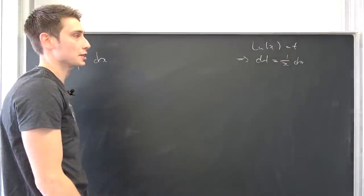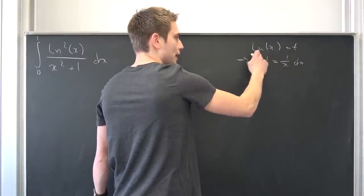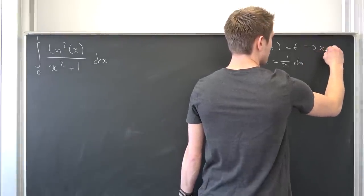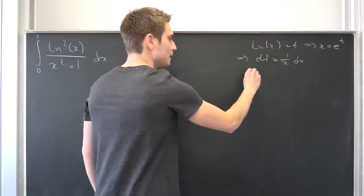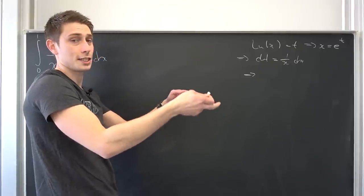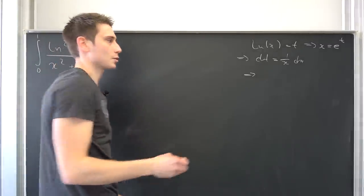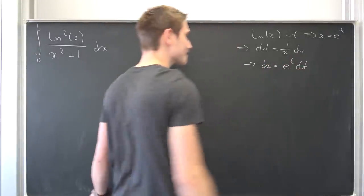When we differentiate that, we are going to get 1 over x dx is equal to dt. Now our goal is to find out what x actually is. Easy peasy lemon squeezy. If we just apply base e on both sides, we are going to get that x is nothing but e to the t. Meaning dt is nothing but e to negative t dx. We can multiply both sides by e to the t, it's not equal to zero, to get that dx is nothing but e to the t dt.